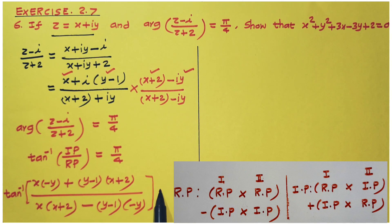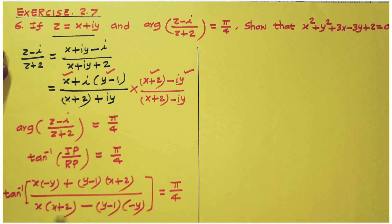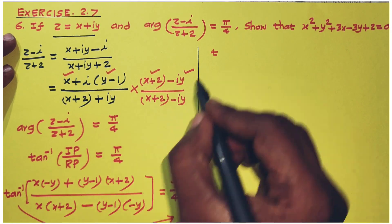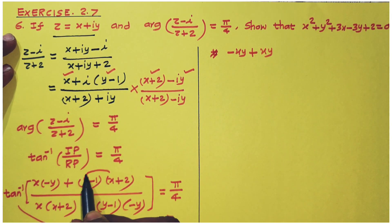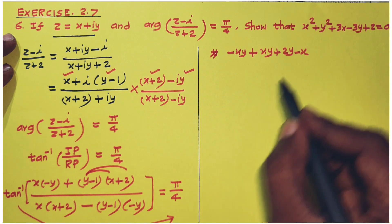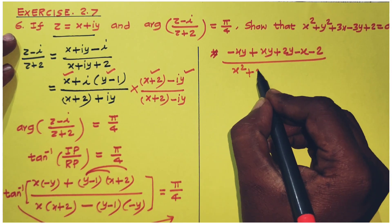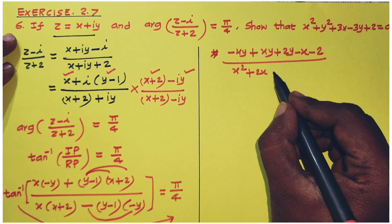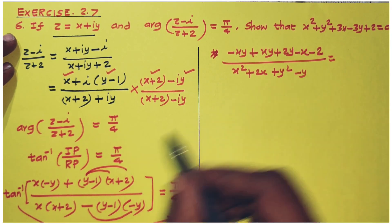So tan inverse of imaginary part divided by real part equals pi divided by 4. Expanding the numerator: x times minus y gives minus xy, plus y times x gives xy, plus y times 2 gives 2y, minus 1 times x gives minus x, minus 1 times 2 gives minus 2. Expanding the denominator: x squared plus 2x plus y squared minus y.